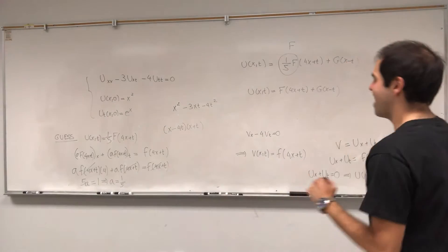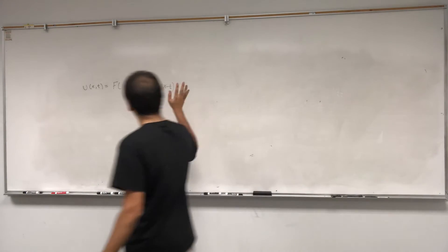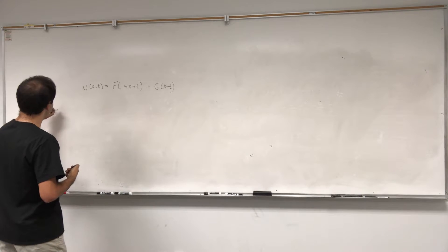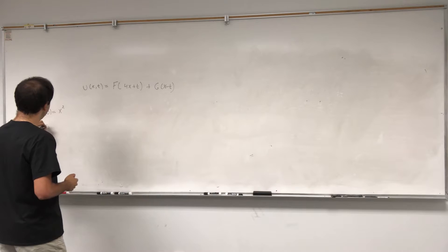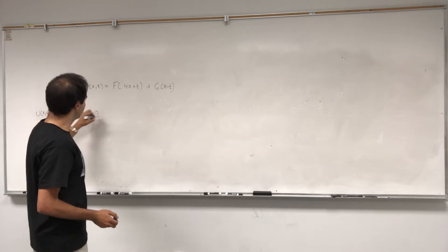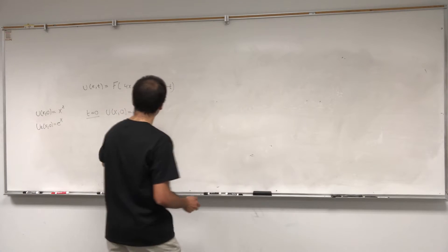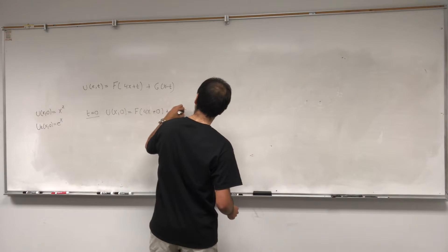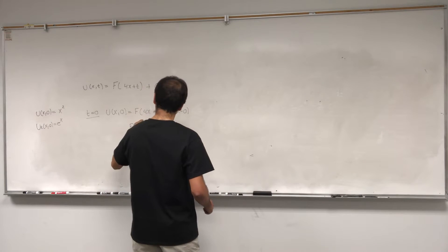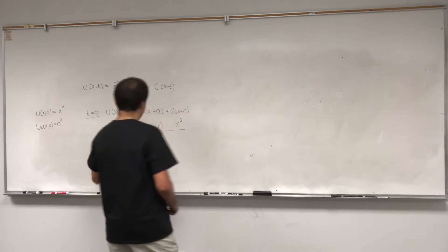Now we just need to plug in the initial conditions. To remind you: u(x,0) = x² and ut(x,0) = e^x. To find u(x,0), plug in t equals 0: f(4x plus 0) plus G(x minus 0) = f(4x) plus G(x). We know this equals x squared. That's our first equation.